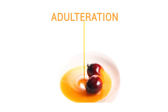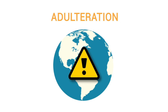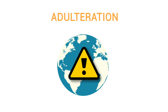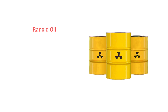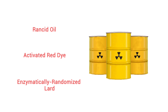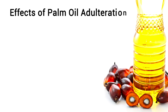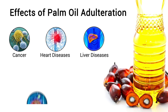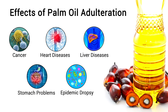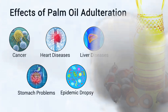Adulteration in palm oil has always been a major issue faced by countries globally. Each year the cases of palm oil adulteration keep multiplying. Harmful substances like rancid oil, activated red dye, enzymatically randomized lard, etc. are widely used as adulterants in RBD palm oil, which can cause cancer, heart and liver diseases, stomach problems, and epidemic dropsy.